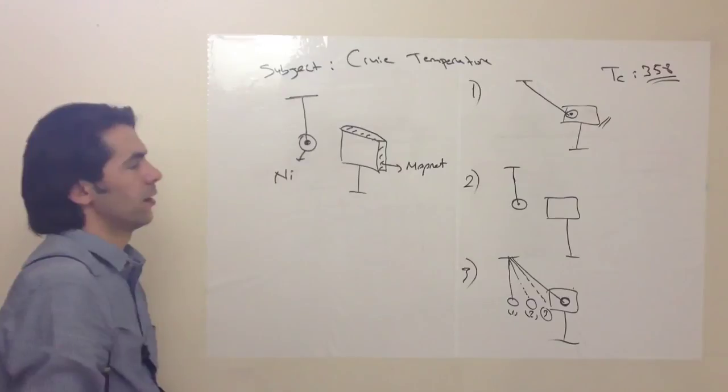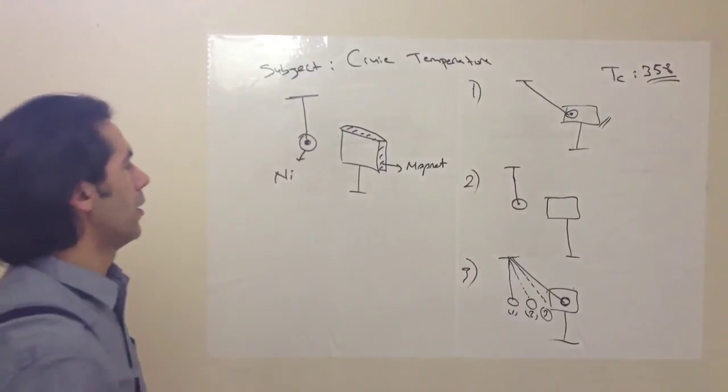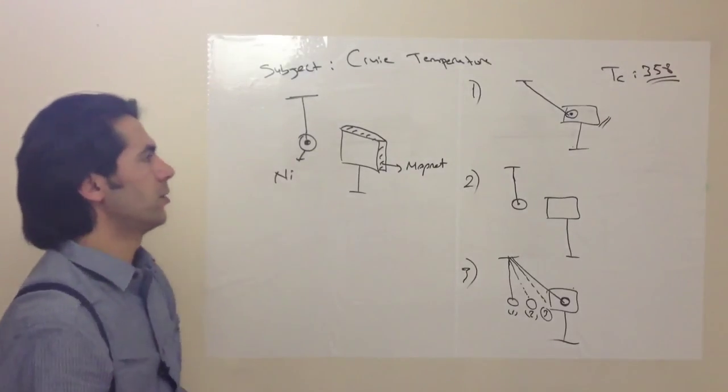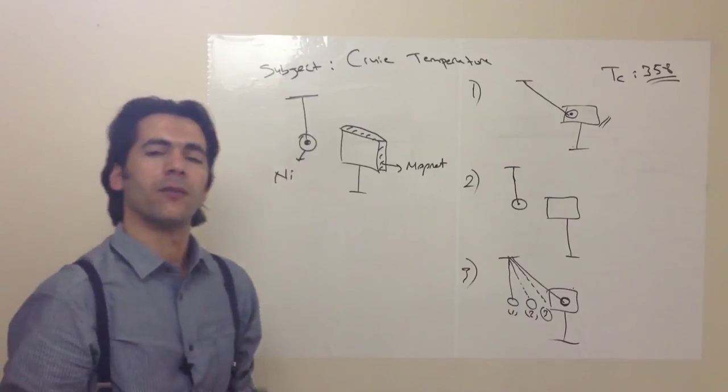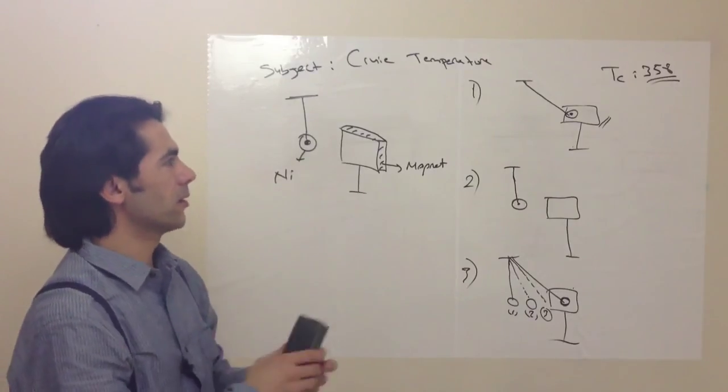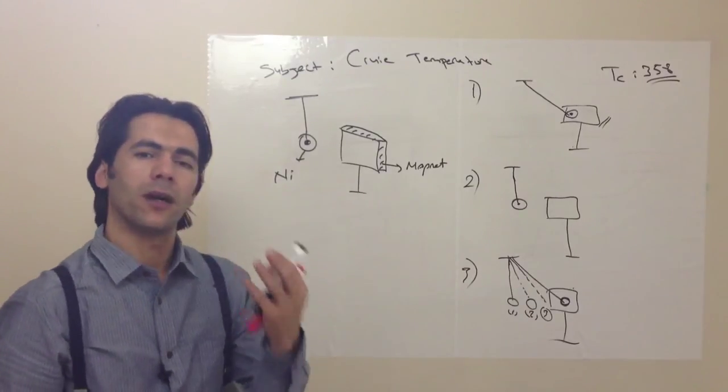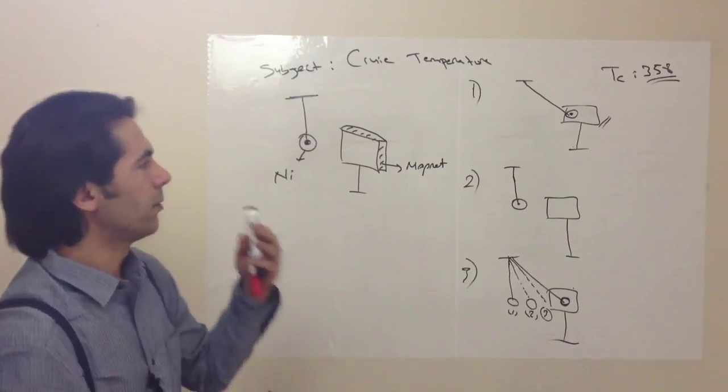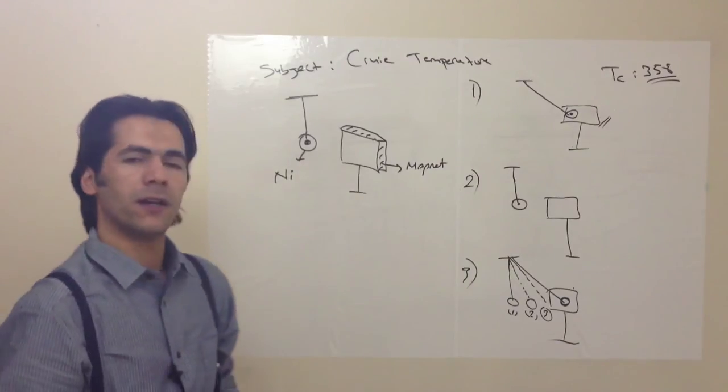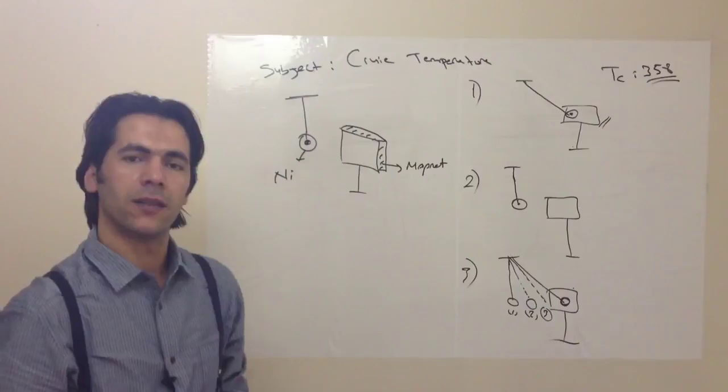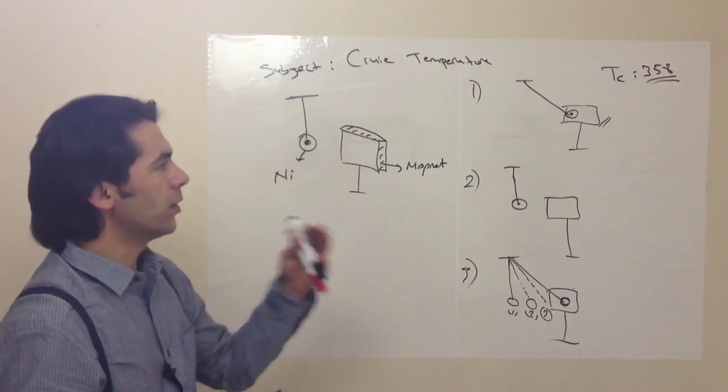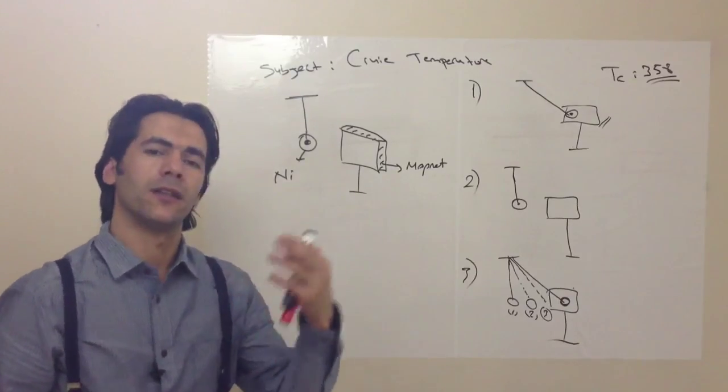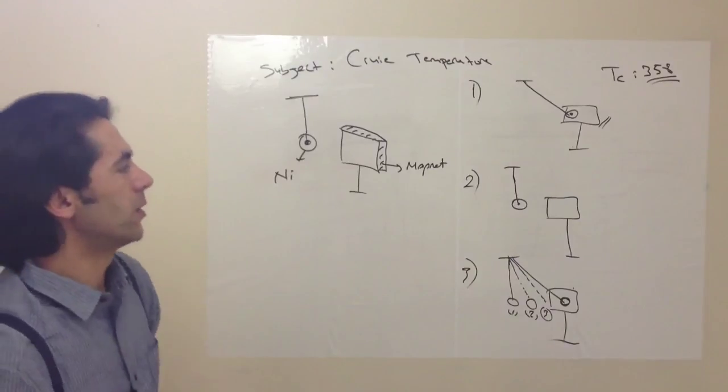This is our demonstration about Curie point. To sum up, Curie point is a point where ferromagnetic or other magnetic materials lose their magnetic property and become paramagnetic. That's why they are not attracted by magnet anymore. But if you cool it down, it will have its magnetic property.